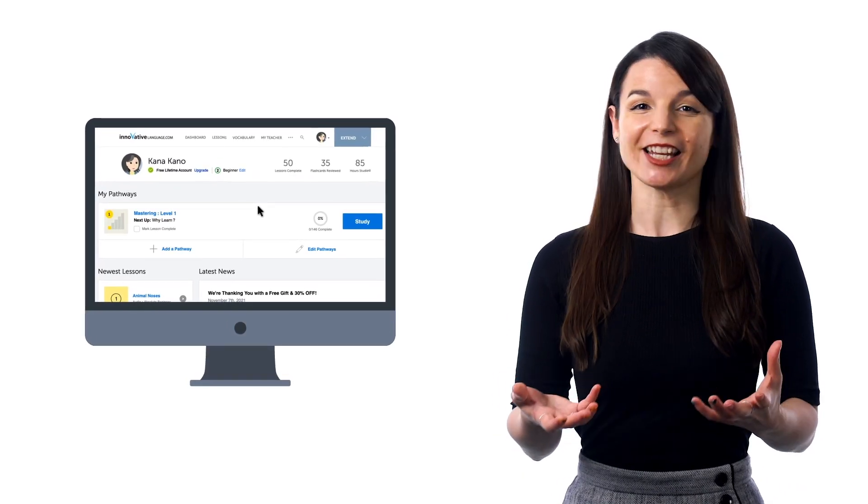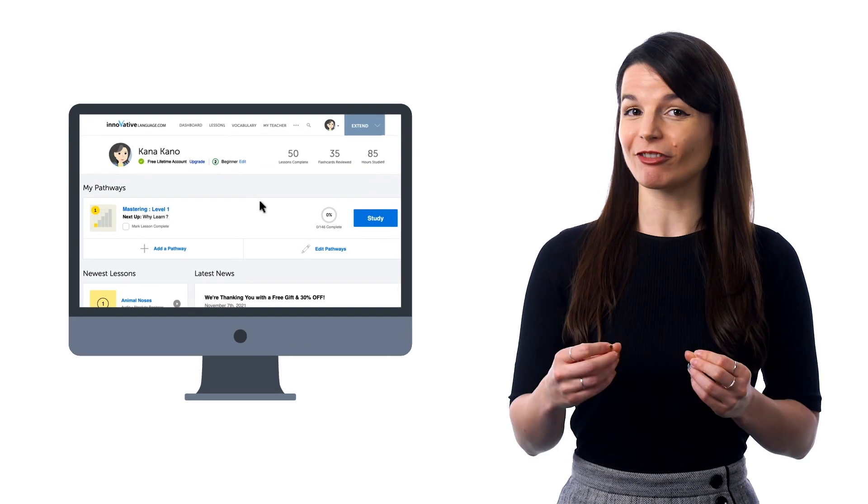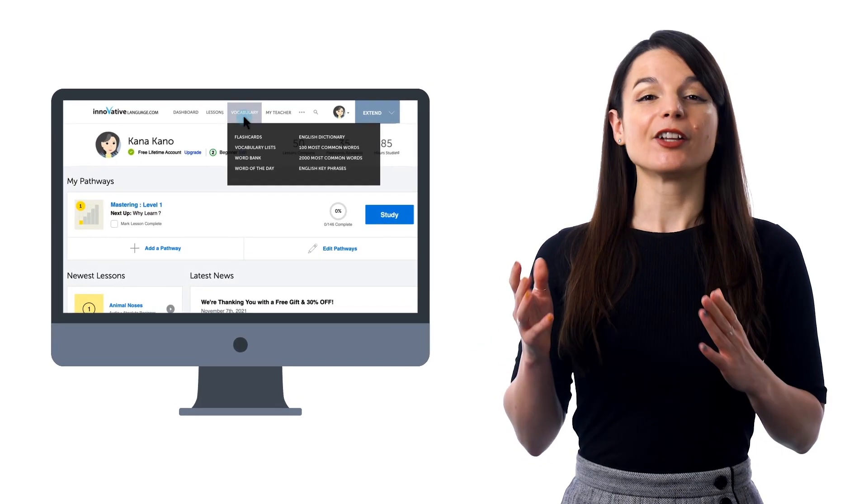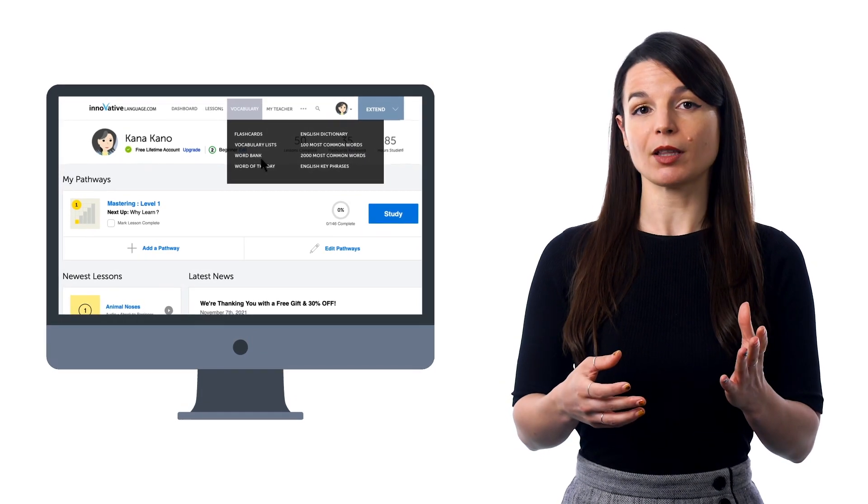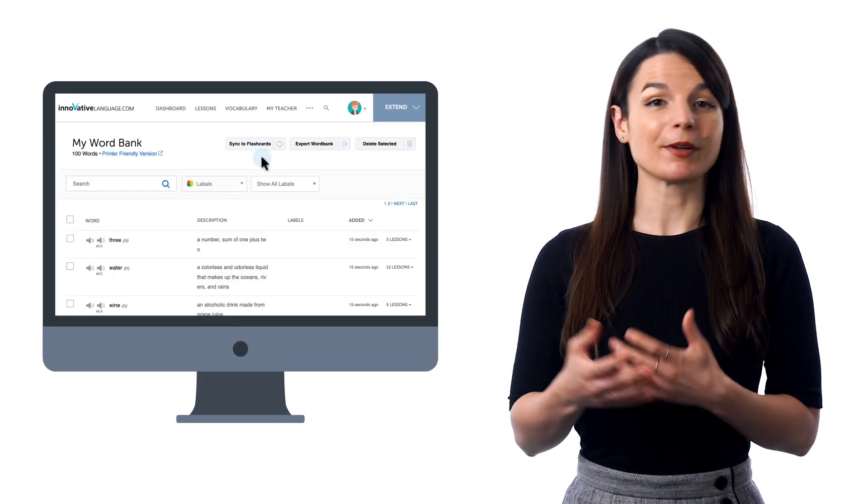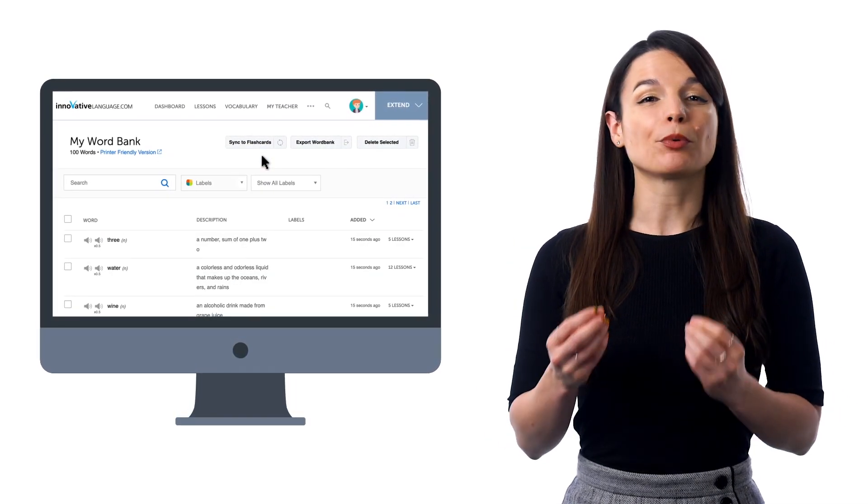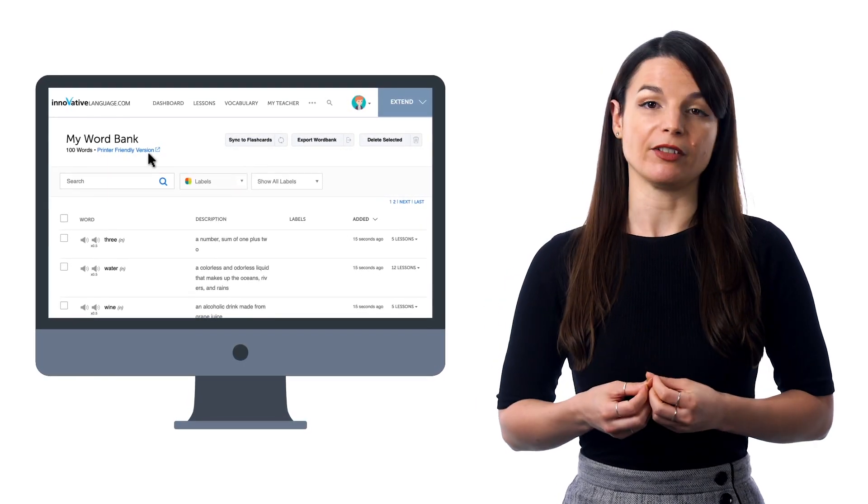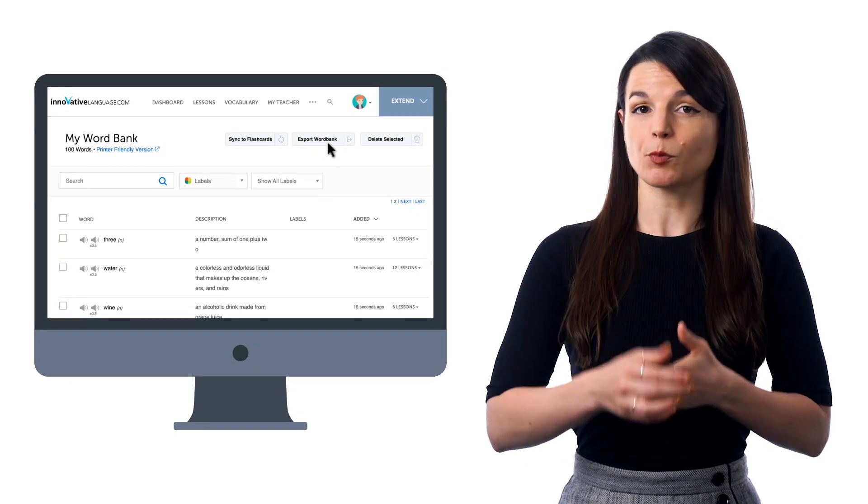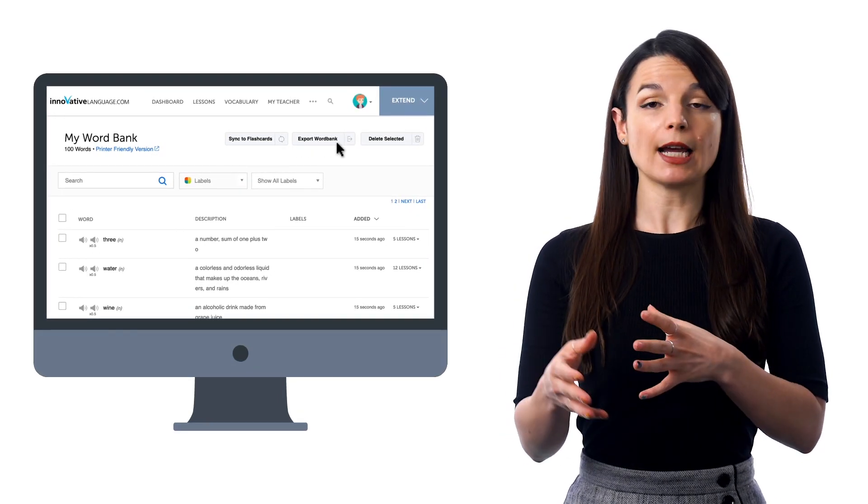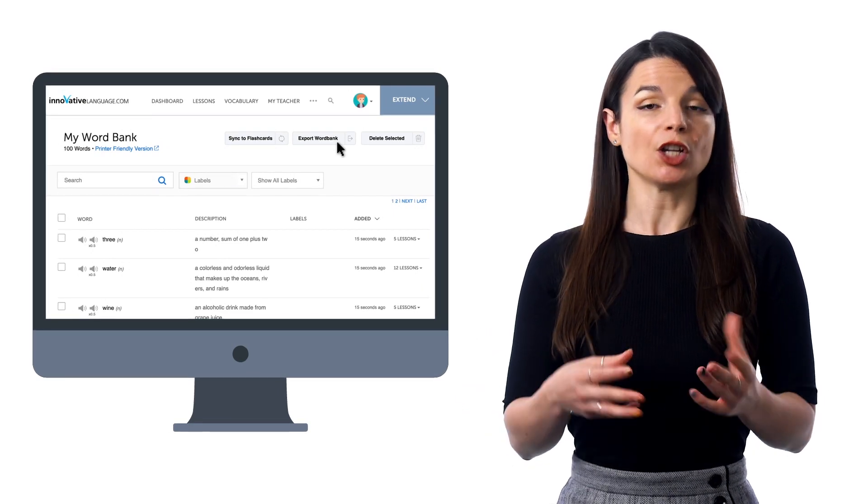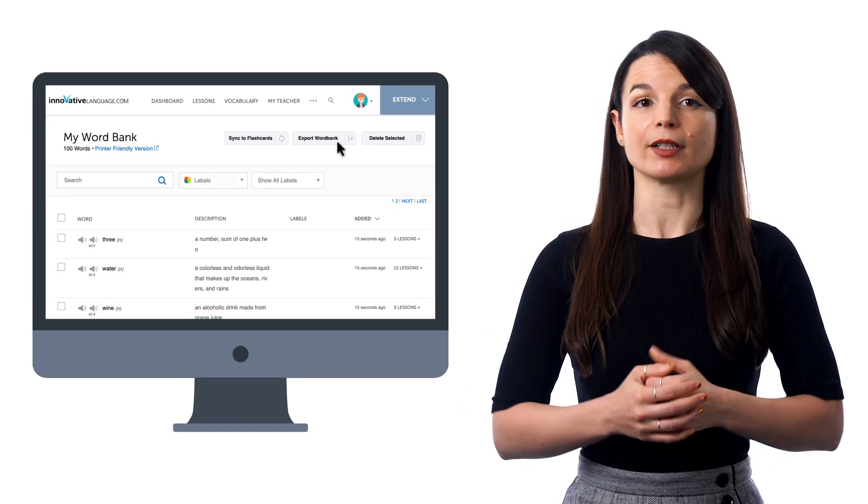The word bank is kind of like your extended brain, where you can save words and phrases that you come across to the word bank, so you review them later. Just look for the word bank in the vocabulary menu on the site. But what's cool is you can also create printable study sheets for your words and phrases as well. Just click on printer-friendly version. You can also click export word bank. If you've organized and labeled your words into categories, such as verbs and adjectives, you can select that label and export it as a PDF. Then print the file out. You can write on it and keep it as physical study material.